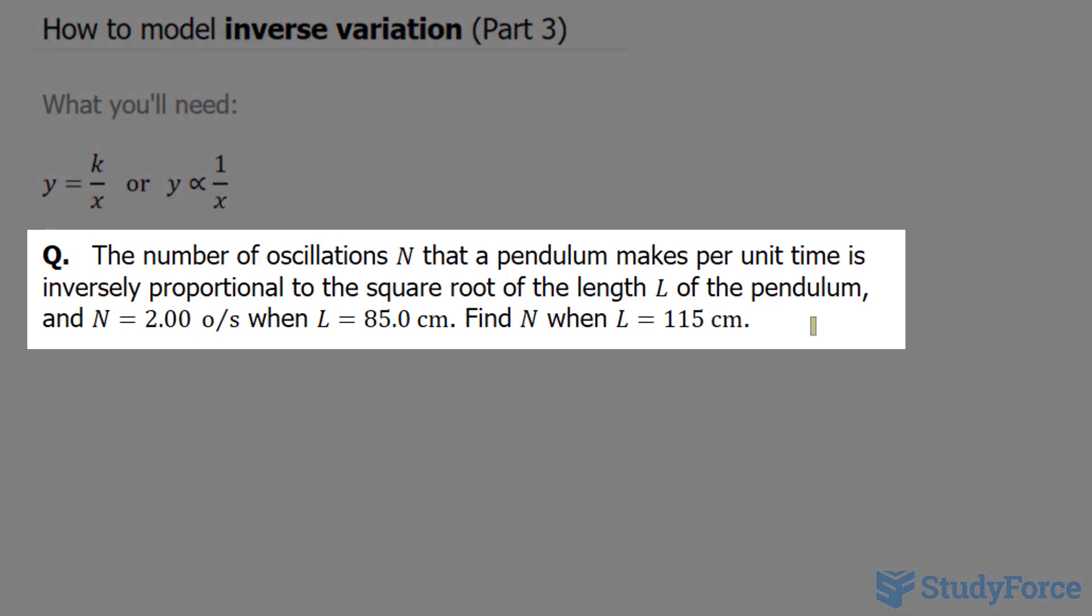The question reads: the number of oscillations n that a pendulum makes per unit time is inversely proportional to the square root of the length l of the pendulum, and n is equal to 2.00 when l is equal to 85 cm. Find n when l is equal to 115 cm.